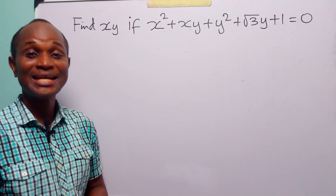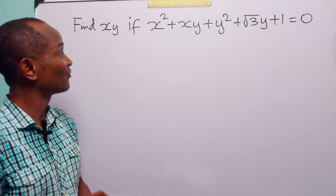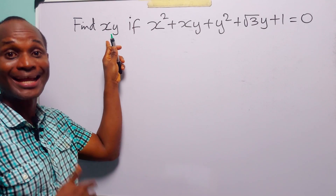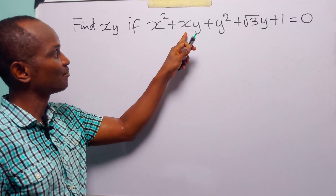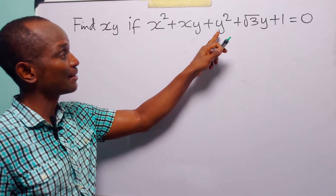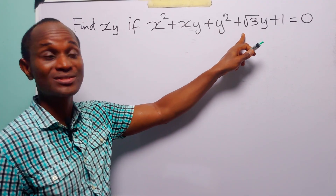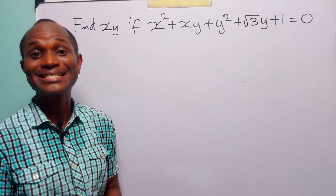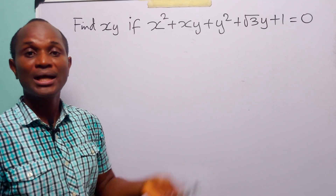Hello and welcome. In this math tutorial, our task is to find the value of xy, given that x squared plus xy plus y squared plus root 3y plus 1 is equal to 0.